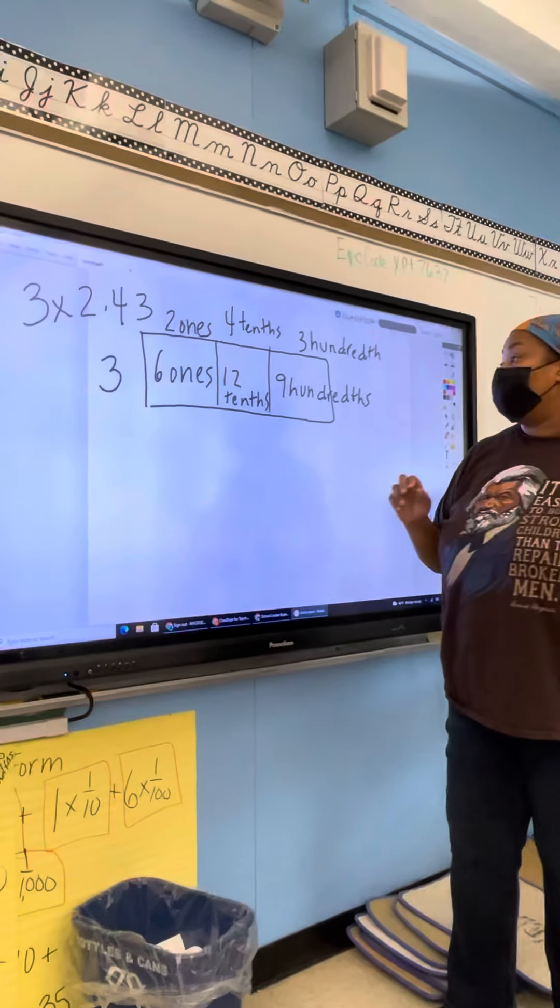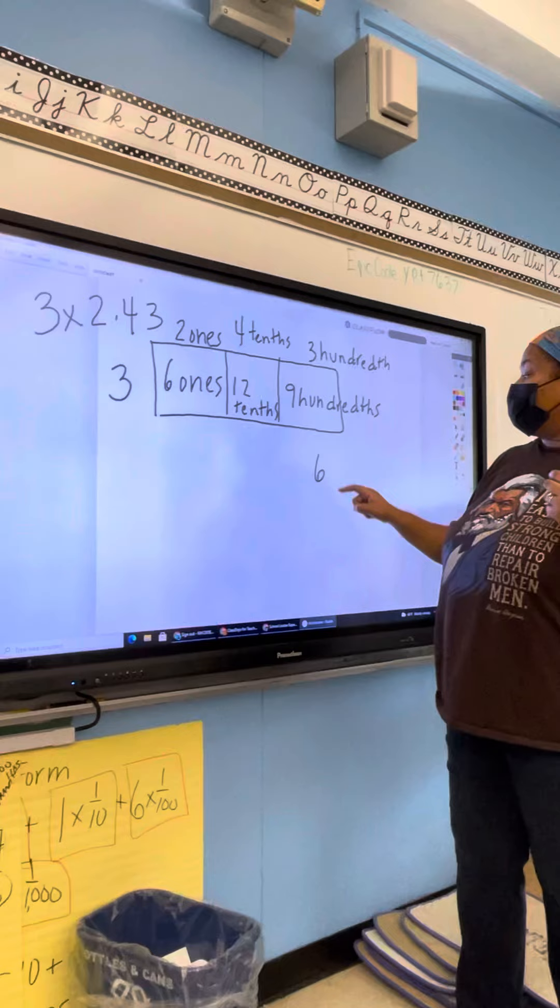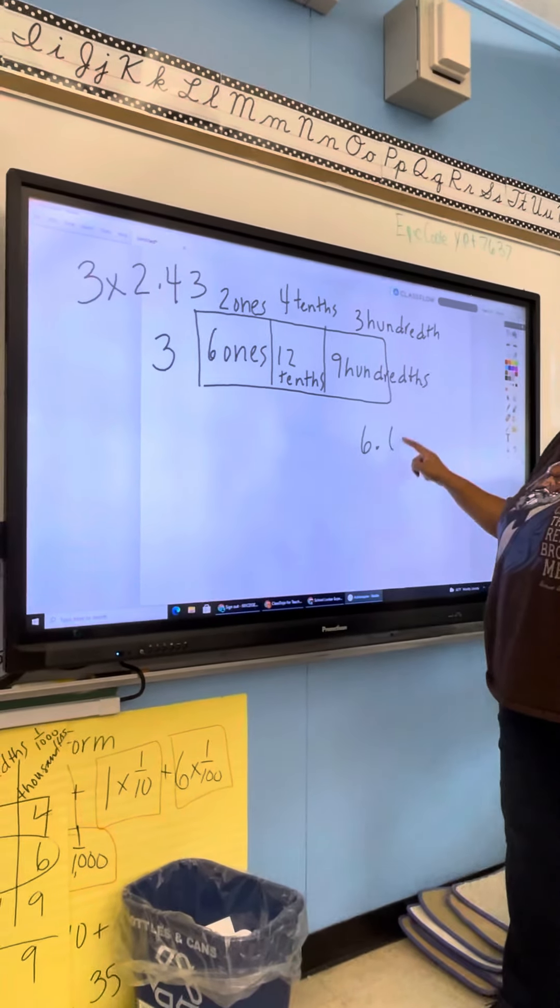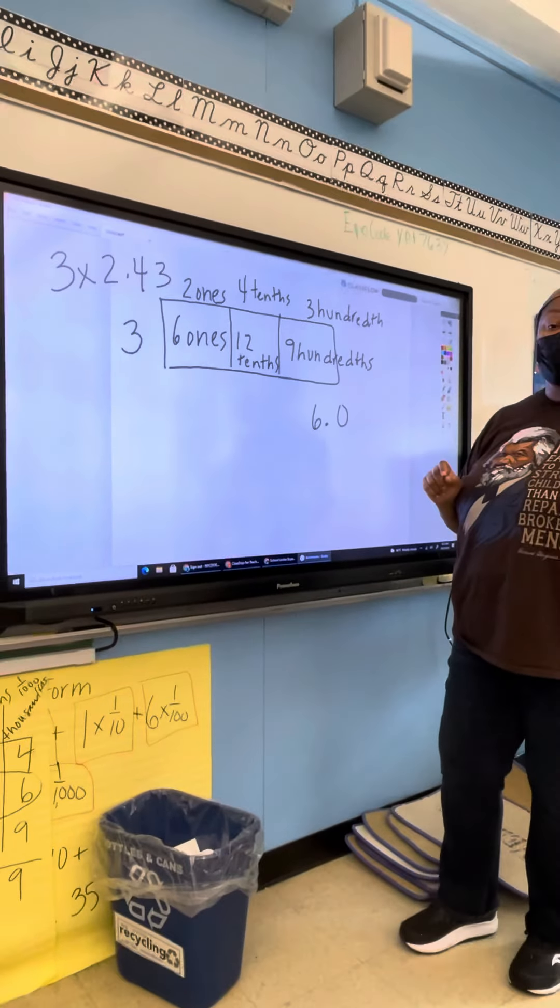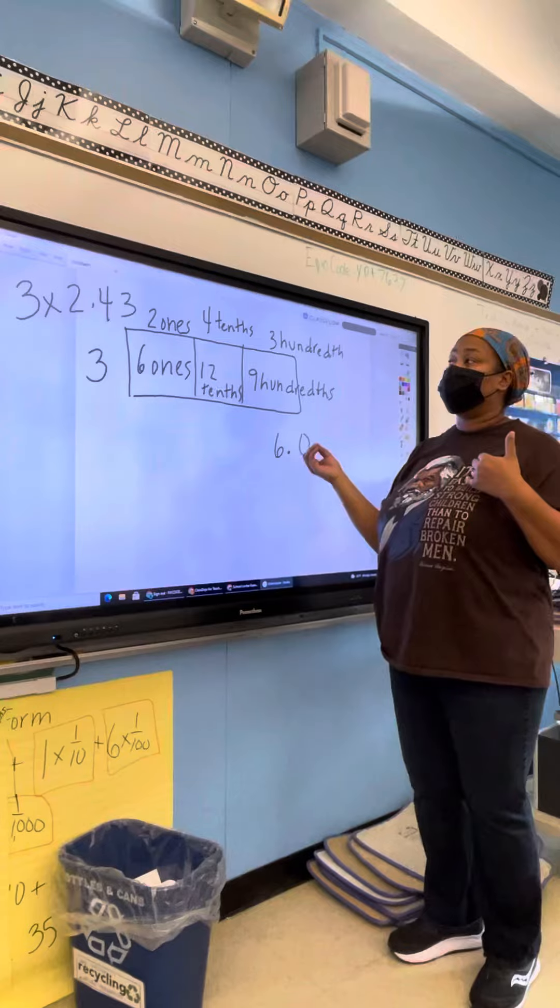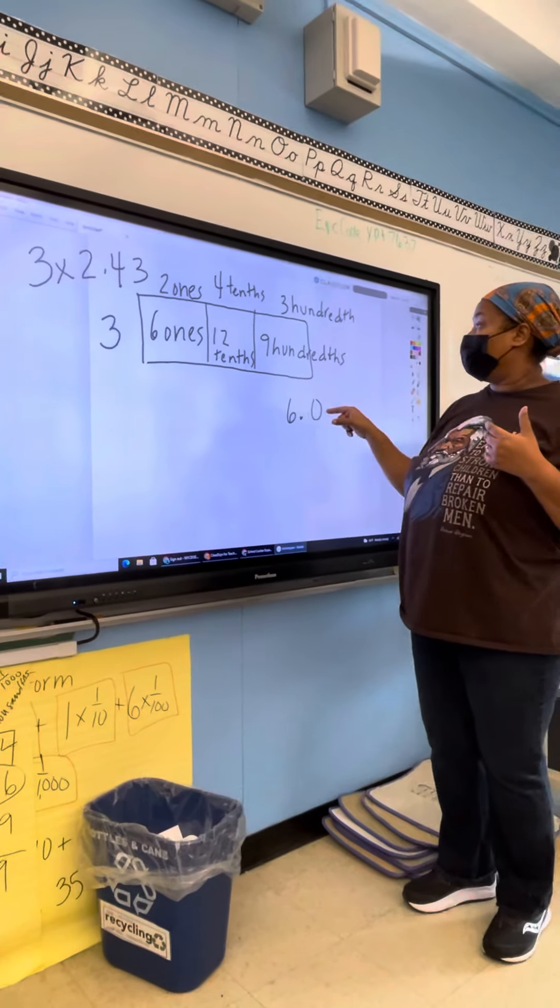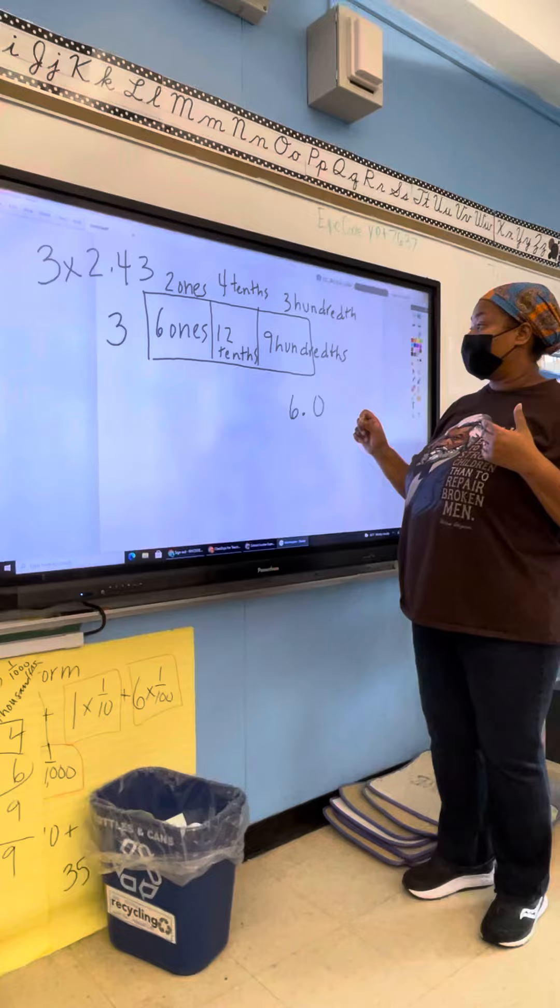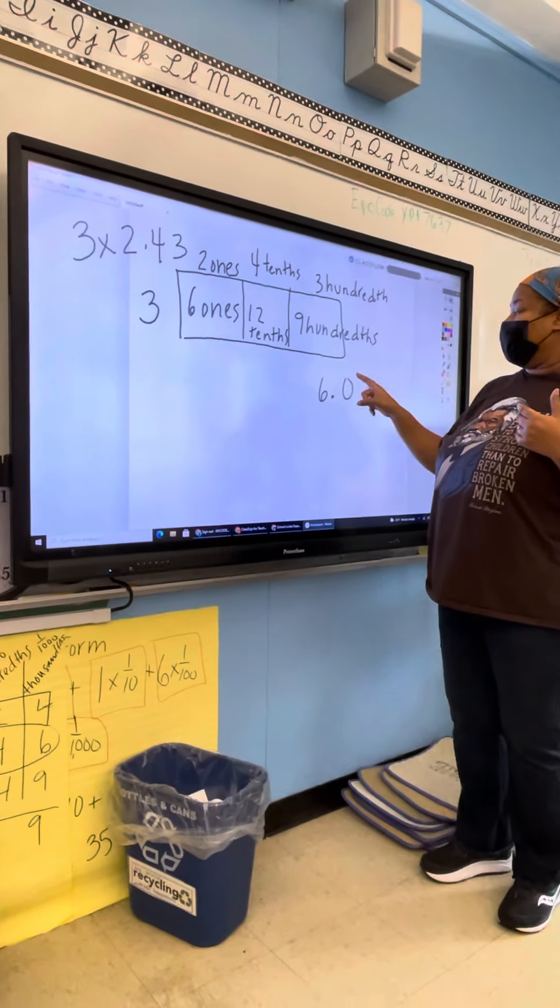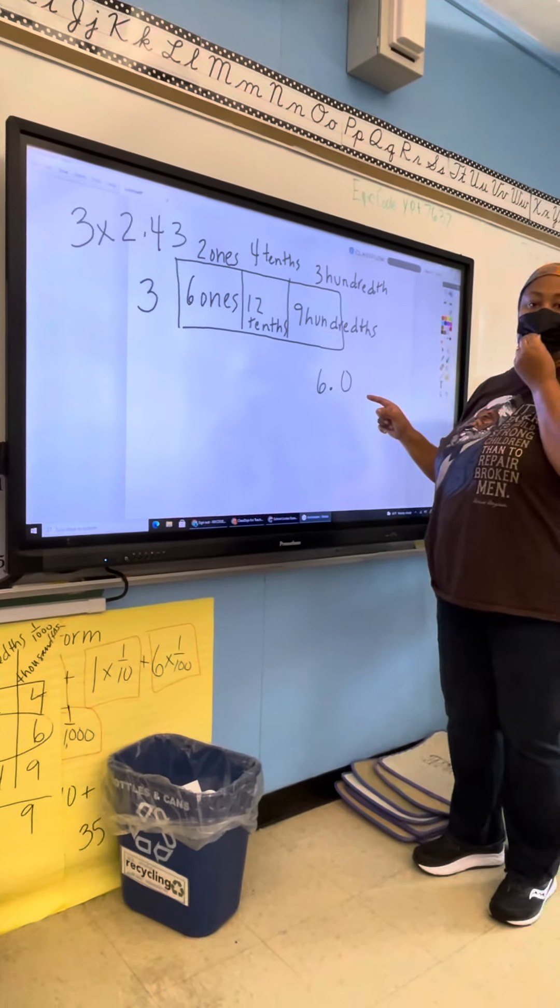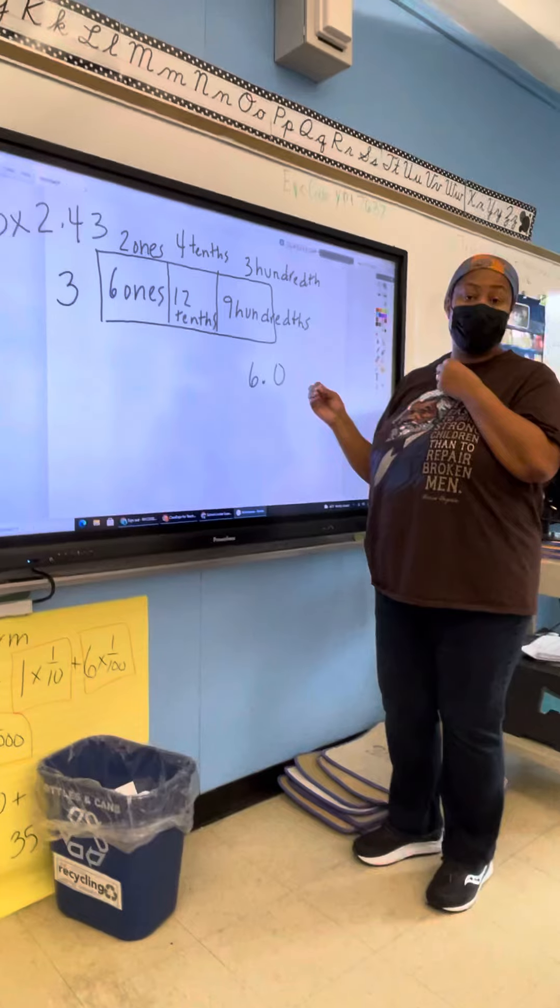So when I add this up, 6 ones is going to look like that. I don't really need the decimal, but I want to make sure I include it so I don't get confused when I add the other numbers. So 6.0 is 6 ones. 12 tenths. I can't write a 12 in the tenths place because I can't have a two-digit number in standard form.